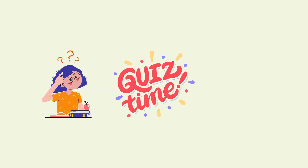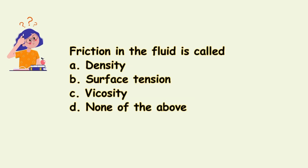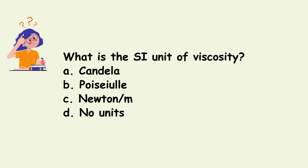Now before closing the video, let us check your knowledge about viscosity. First question: friction in the fluid is called — a) density, b) surface tension, c) viscosity, or d) none of the above. The answer for this question is viscosity — friction in the fluid is called viscosity. Next question: what is the SI unit of viscosity — a) candela, b) poise, c) newton per meter, or d) no units.